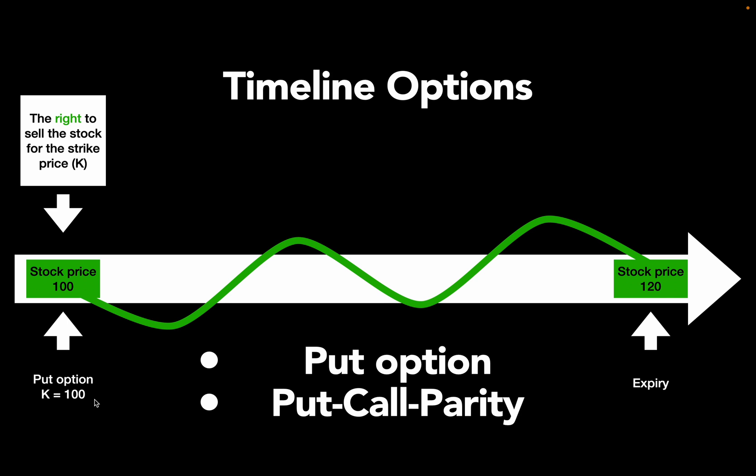Now at any given time in the runtime of this option you can buy this right and this right has a price, which is called the option premium, that is simply the price of the option.